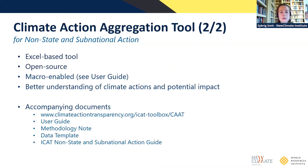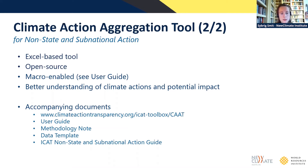The Climate Action Aggregation tool is an Excel-based tool. It is open source, and users should enable macros to use the tool. It is developed to obtain a better understanding of climate actions and potential impacts in a region or country. The tool also has several accompanying documents: the user guide, which users should read before using the tool; the methodology note, where all the methods throughout the tool are explained; and the data template, which can be used to develop a harmonized data set. All these documents can be found under the hyperlink shown on the screen.